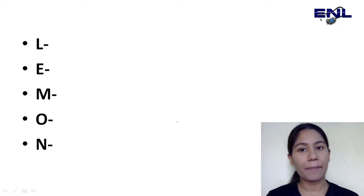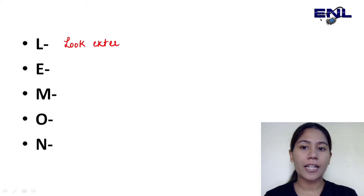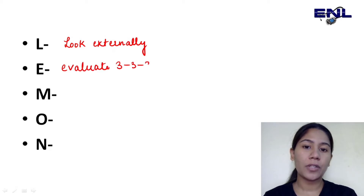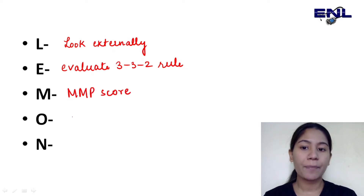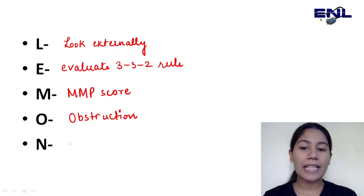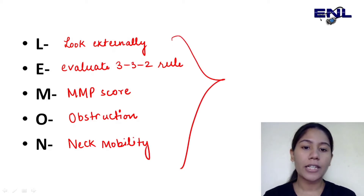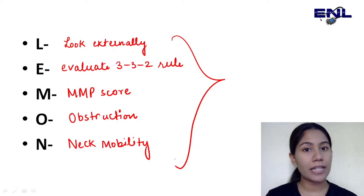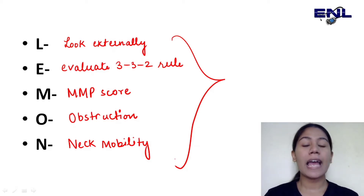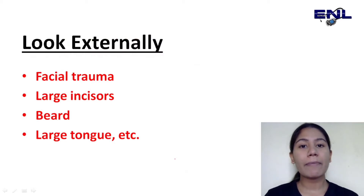For airway assessment, we have a shortcut to learn it — that is L-E-M-O-N, LEMON. So L stands for Look Externally, E stands for Evaluate the 3-3-2 Rule, M stands for Mallampati Score (which we will discuss ahead), O stands for Obstruction (we check for any obstruction), and N stands for Neck Mobility. This is the shortcut you have to remember.